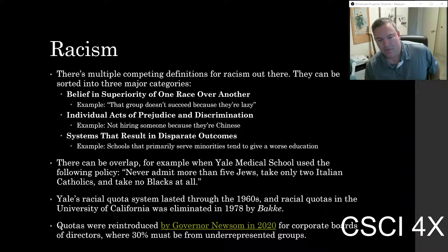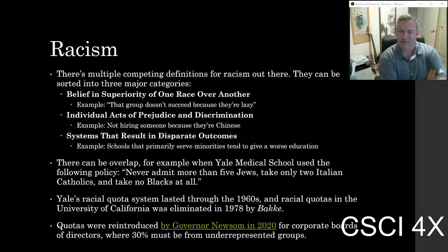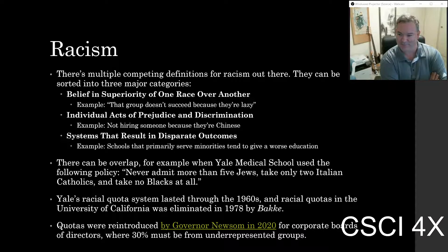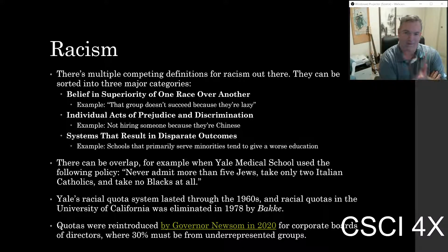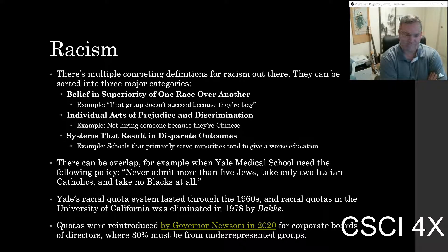There are kind of three different definitions for racism, and the only thing they really have in common is that everyone who believes one of them is firmly convinced their definition is right and nobody else's is. The first is the belief in the superiority of one race — so if you feel that white people are superior to black people, that's racism. It makes for a very easy excuse for not having to do anything to help another group of people.